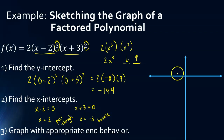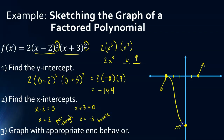So now we have everything we need. The x-intercepts are at negative 3 and positive 2, and the y-intercept is way down at negative 144. The left side goes down, the right side goes up. At negative 3 it's going to bounce off, so it can come down and hit the y-intercept. Then it's going to come up and pass through positive 2. That's how we'd get our graph.